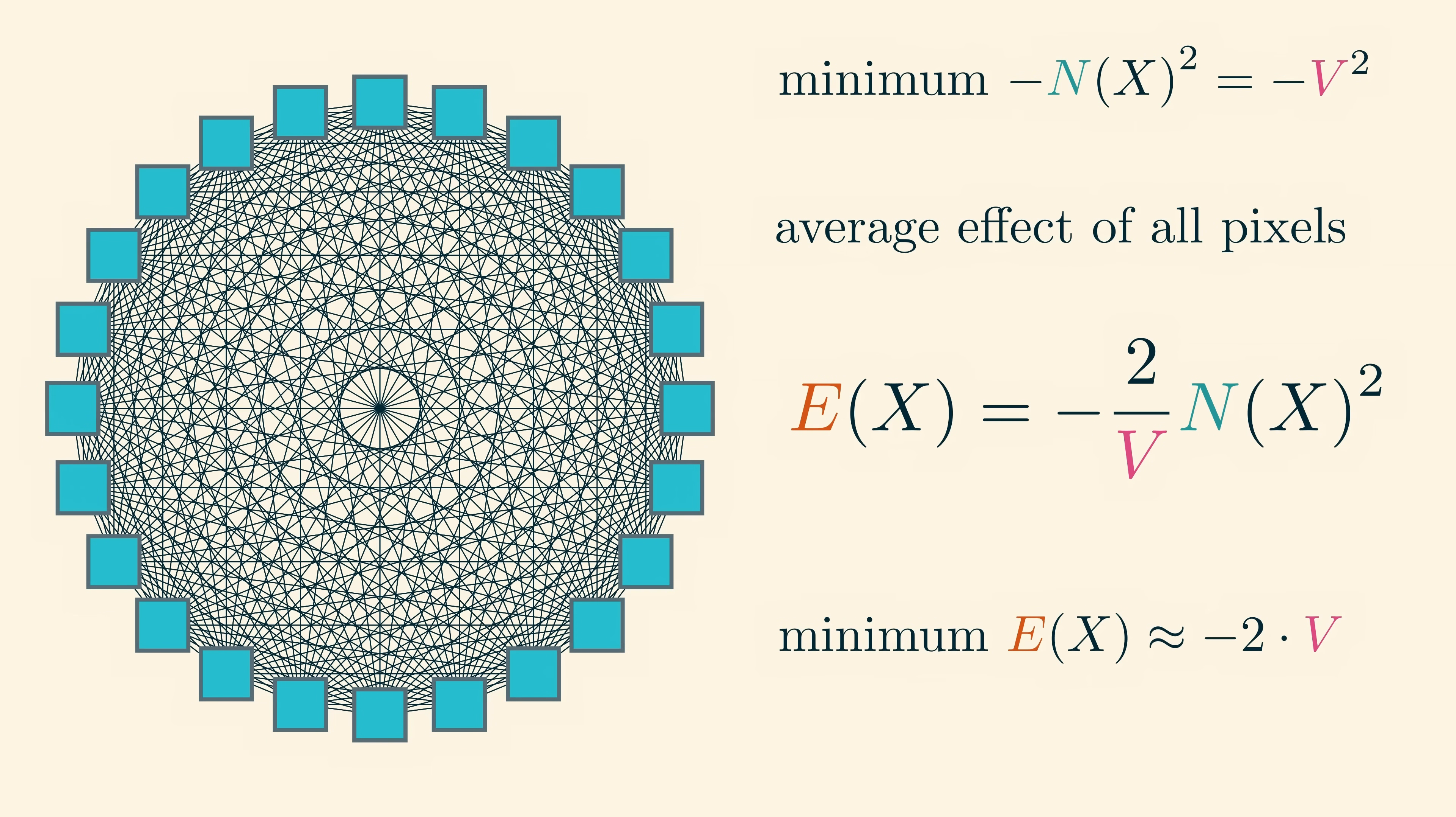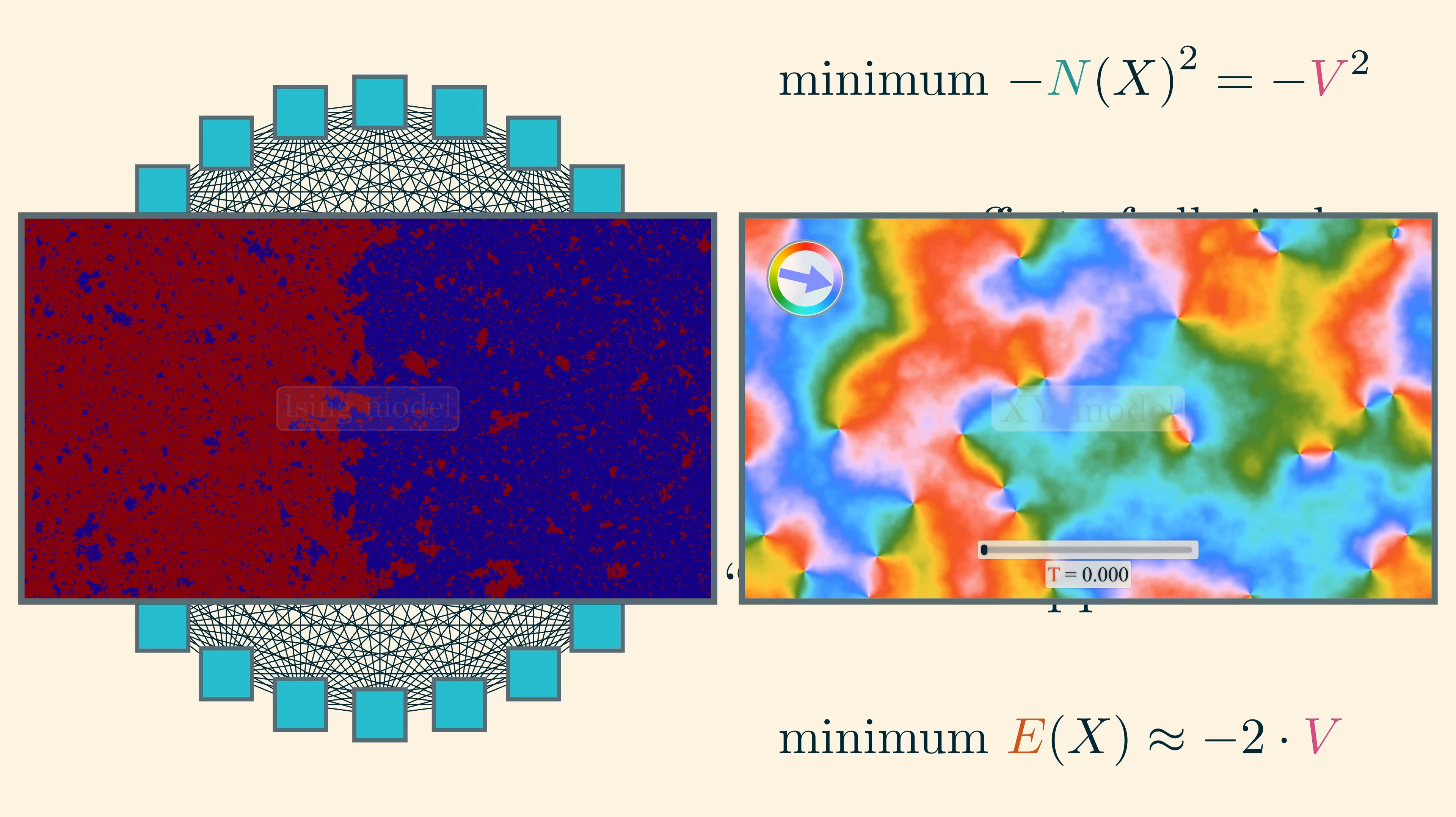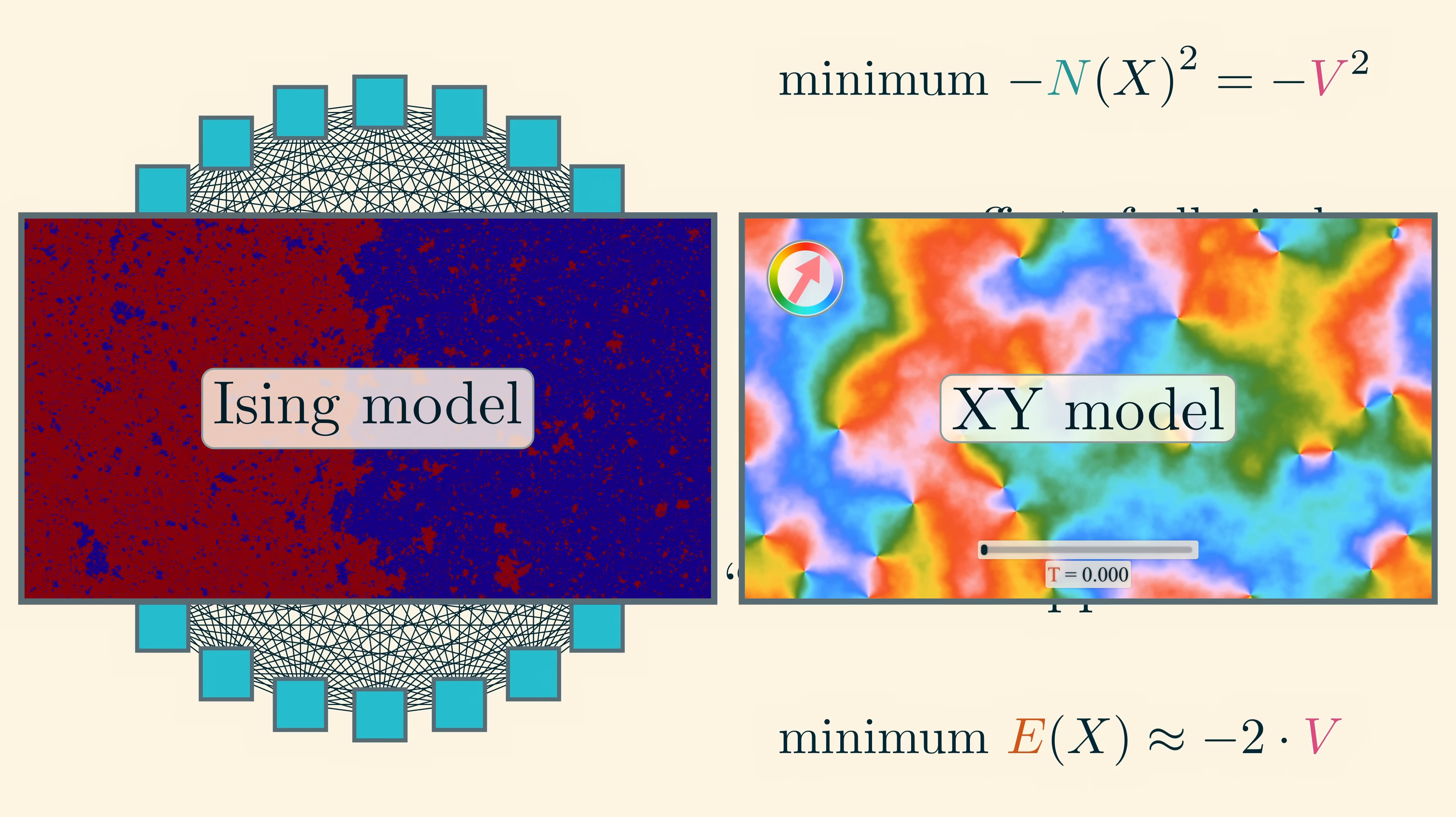For this reason, this is often called the mean field approximation. The word field here comes from magnetic field, because these models were first studied from the magnetic perspective which we discussed briefly in the last video.